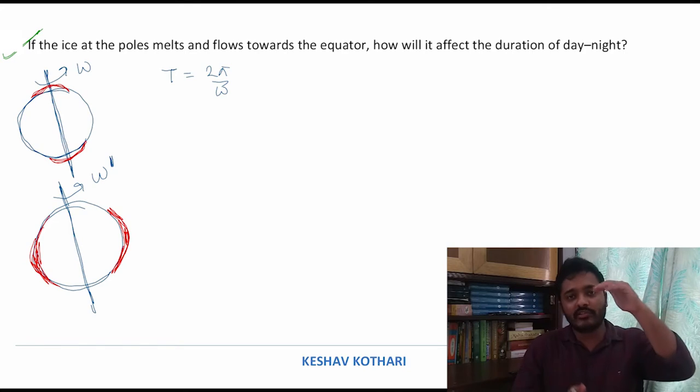This axis has omega, and there is omega dash coming out. This omega dash is what happens when the ice from the poles melts and comes and accumulates on the equator. So the mass from the poles moves to the equator.